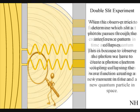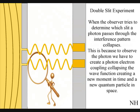When the observer turns on a detector to determine which slit a photon passes through, the interference pattern collapses. This is because to observe the photon, we have to create a photon-electron coupling, collapsing each wave front into a new quantum particle that will have its own position in space and time.